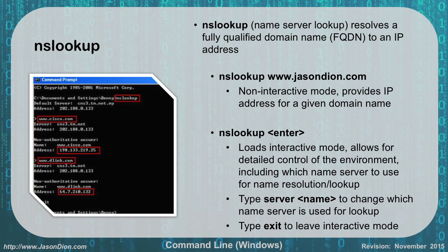NSLOOKUP stands for Name Server Lookup and resolves fully qualified domain names to IP addresses. You can use it in non-interactive mode — for example, nslookup www.jasondeon.com — and it will immediately return the IP address. Or you can type just nslookup and Enter to enter interactive mode, where you can change the name server by typing 'server' followed by a DNS server IP or name, then look up domains by typing them directly. In interactive mode you can look up MX records (mail records), A records (address records), and CNAME records (pointer records). Type exit to leave interactive mode. The example on the left shows interactive mode where Cisco.com and dlink.com were looked up, returning their IP addresses shown highlighted in red.